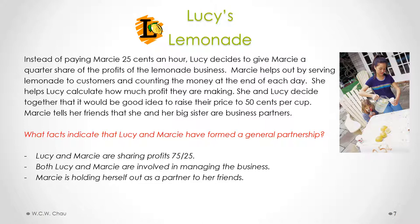The first fact that indicates a partnership is that Lucy and Marcy are sharing the profits, 75% to 25%. The second fact is that both Lucy and Marcy are involved in managing the business, which also indicates a general partnership. The last fact is that Marcy is holding herself out as a partner to her friends — when she tells her friends that she and her big sister are business partners, that is what we mean by holding yourself out as a partner.